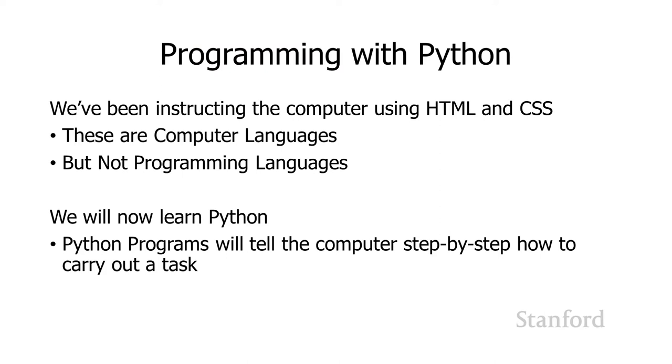We've been instructing the computer how to carry out tasks using HTML and CSS. HTML and CSS are computer languages that allow us to communicate with the computer, but they're not programming languages because we aren't writing programs with them. We're now going to switch to learning Python, which is a programming language. The key distinction here is that with Python, we're going to tell the computer step by step how to carry out a task.